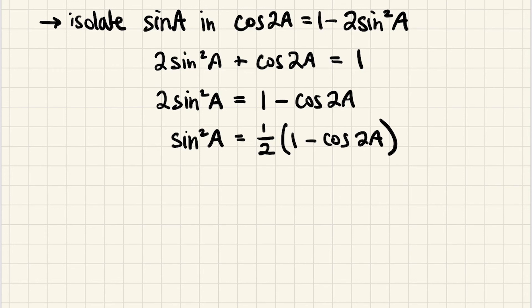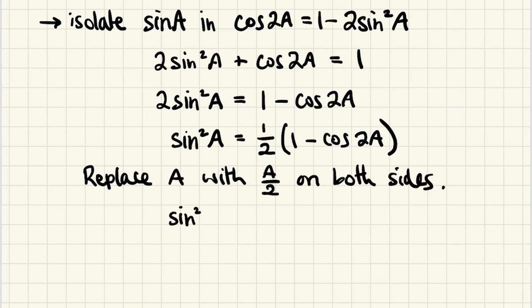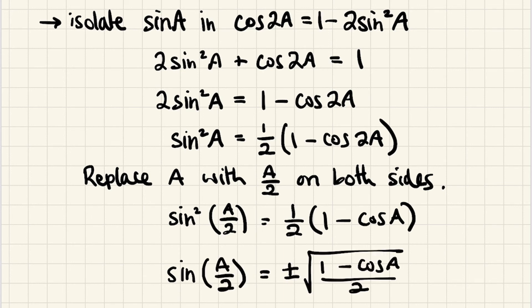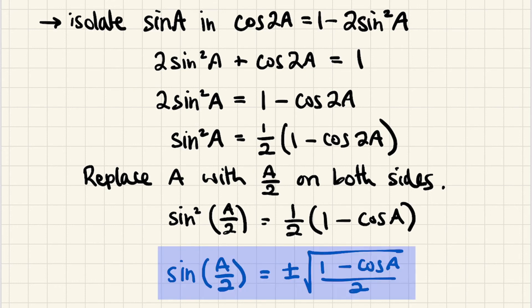In order to create the half angle identities, what we're now going to do is replace each a with a over 2. So on the left we'll have sine squared of a over 2, and on the right we're going to have one half times 1 minus cosine of — well, 2 times a over 2 is just going to be a. This is a half angle identity. Now this isn't the form we typically write it in, so let's take the square root, noting that this entire fraction is within the square root including the denominator 2. So this is the half angle identity for sine.